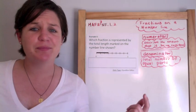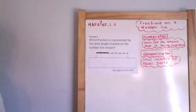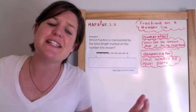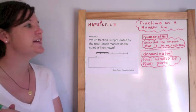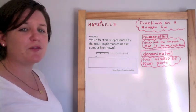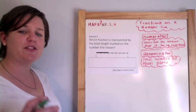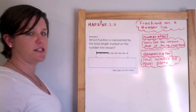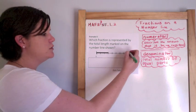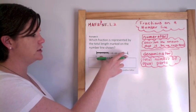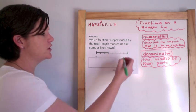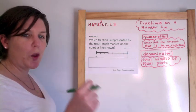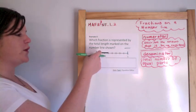So after that last one, this one is going to be so easy because it is not a fraction greater than one. It's a fraction less than one whole. So it says which fraction is represented by the total length on the number line shown? I've got a zero for this side, I've got a one for this side. So it's a fraction in here.